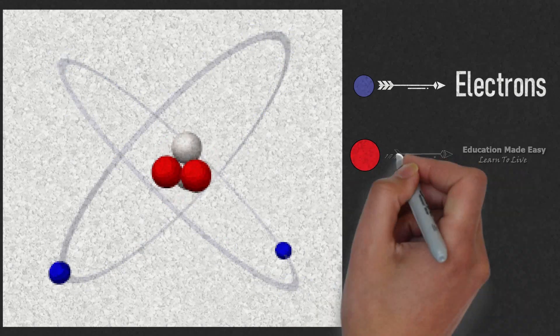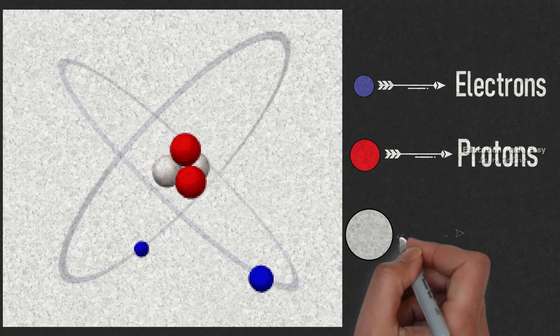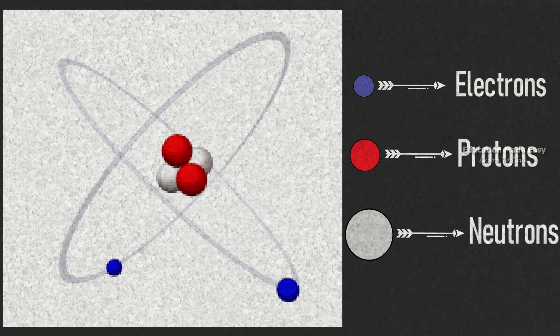The red dots represent positive charges, known as protons. The white dots represent no charge particles, called neutrons.